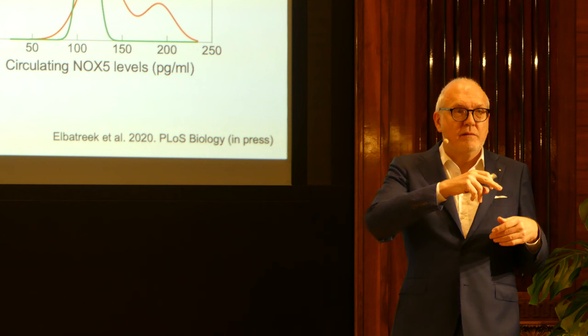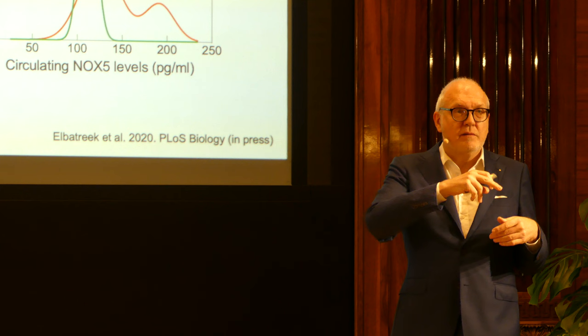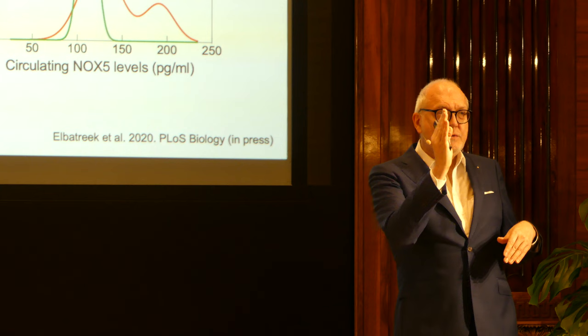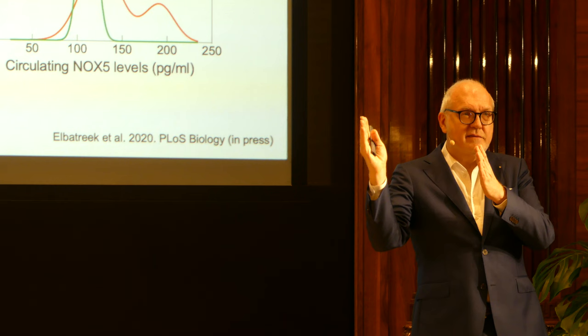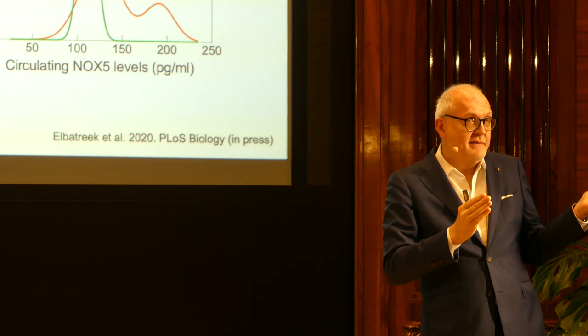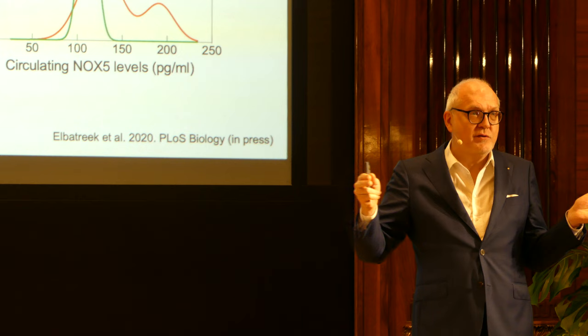Look at other biomarkers we use currently: blood pressure is homogeneously distributed, and we arbitrarily set 130 as the threshold between healthy and disease. Why not 129? Why not 128? The same applies to cholesterol — a monostatic distribution in the population where we arbitrarily set the disease threshold.